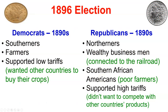If you were a Democrat in the 1890s, you were most likely a southerner, a farmer, or a westerner — supporting low tariffs and wanting other countries to buy your crops. Republicans were more likely northerners and industrialists, with workers pressured to vote Republican. Southern African Americans — freedmen — supported Republicans as the party of Lincoln who freed them, and therefore also supported high tariffs.